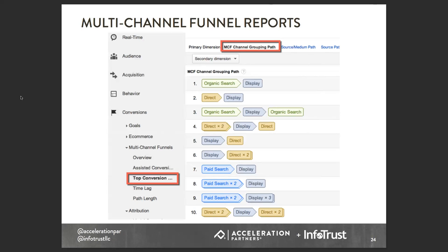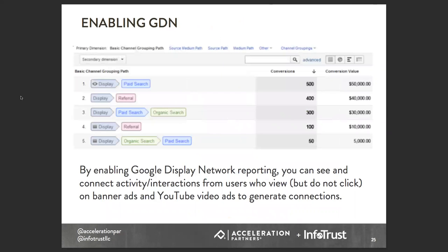There is an integration with the Google Display Network, so you can see activity between interactions — someone saw a display or YouTube video ad, maybe didn't click, but then clicked on a referral ad or came organically. Many organizations struggle with attributing value to display campaigns and impressions. With Google Analytics you can enable Google Display Network tracking. If you use Google Analytics 360, there's a native integration with DoubleClick Bid Manager and DoubleClick Campaign Manager, giving you even more visibility into how display and brand campaigns are performing.